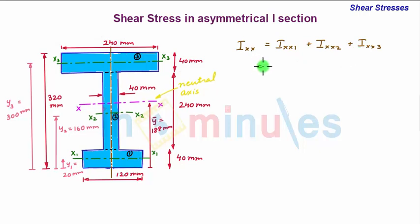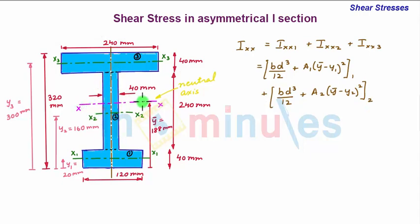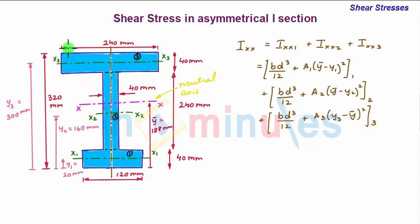Applying the parallel axis theorem, Ixx = [bd³/12 + A1·(y-bar − y1)²] for part 1, plus [bd³/12 + A2·(y-bar − y2)²] for part 2, plus [bd³/12 + A3·(y3 − y-bar)²] for part 3. Each term represents the moment of inertia of that rectangular part about the centroidal axis of the complete eye section.